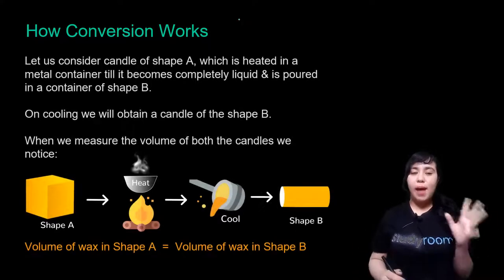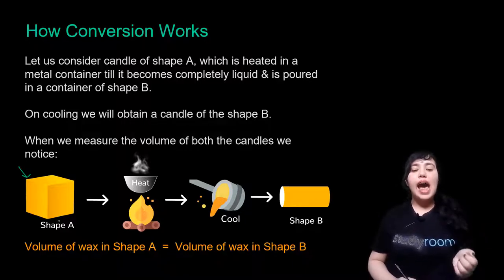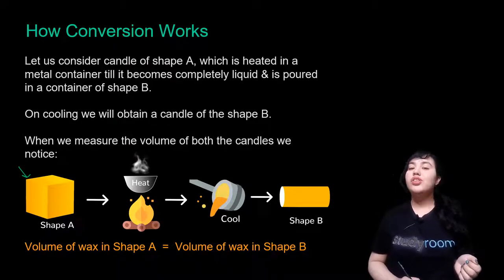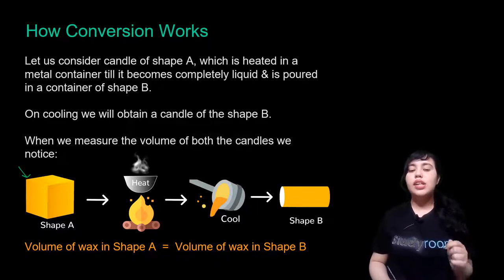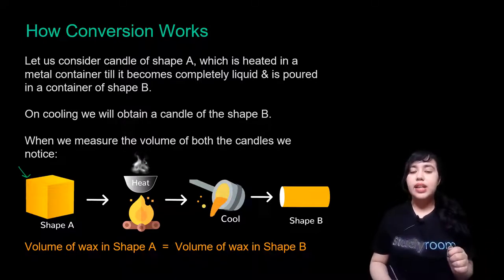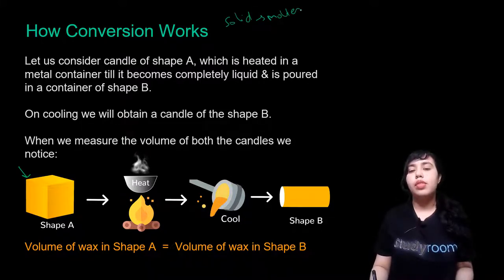But how exactly does it work in math? We have an example of a candle. Let's say I have a candle made out of solid wax — this is the original shape, which looks like a cube or a cuboid. Now I heat it. On heating, any solid would start melting, so it melts. This solid wax converts into molten wax, which you also call liquid wax.